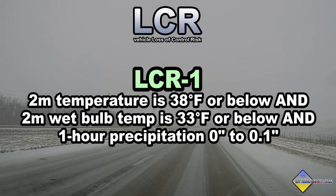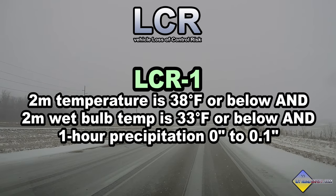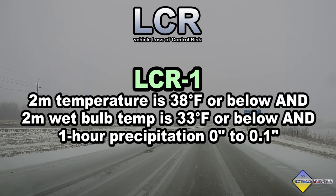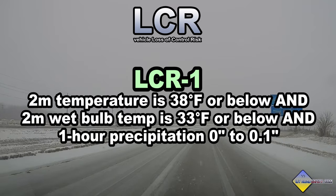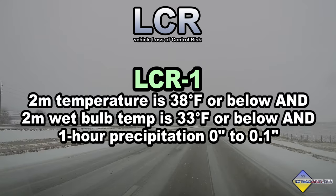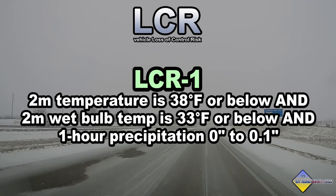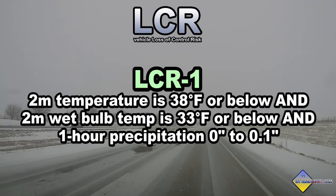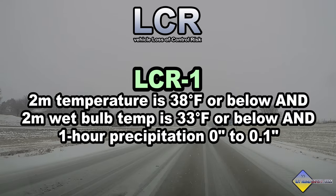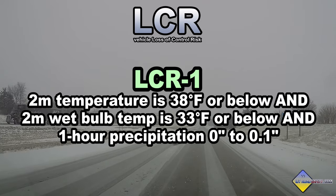If you don't know what wet bulbing is, you can Google it, but briefly it's a phenomenon that causes temperatures to drop when water evaporates into dry air — it's why swamp coolers work in really dry places like Arizona in the summer. When the wet bulb temperature is at or below freezing, falling precipitation can quickly cause the air temperature to drop below freezing even if it starts out well above freezing. This baseline LCR of 1 applies where the air temperature is 38°F, wet bulb temp is 33°F, and light precipitation — under one-tenth of an inch liquid equivalent per hour — is falling.